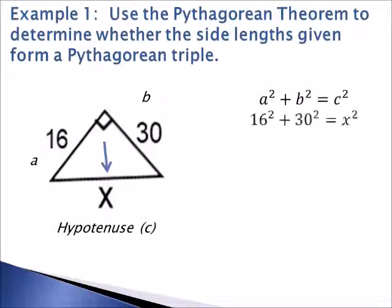So let's take our theorem and substitute in our values. We get 16 squared plus 30 squared equals x squared. After we simplify, we get 1,156 equals x squared.